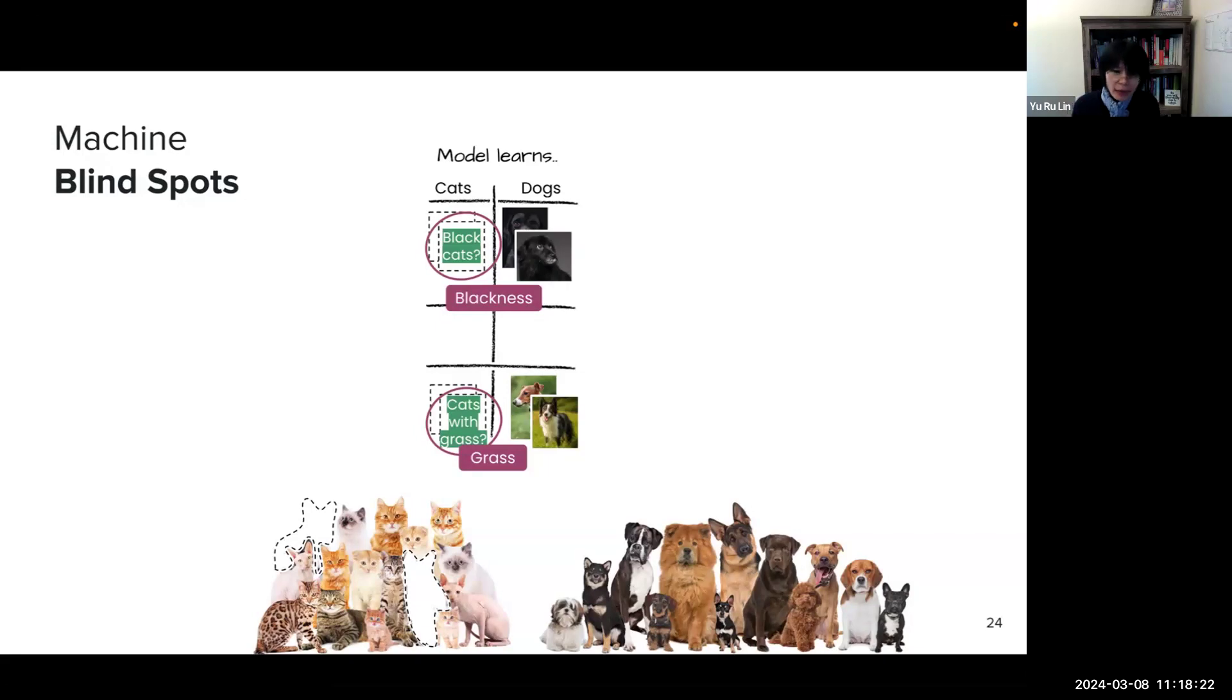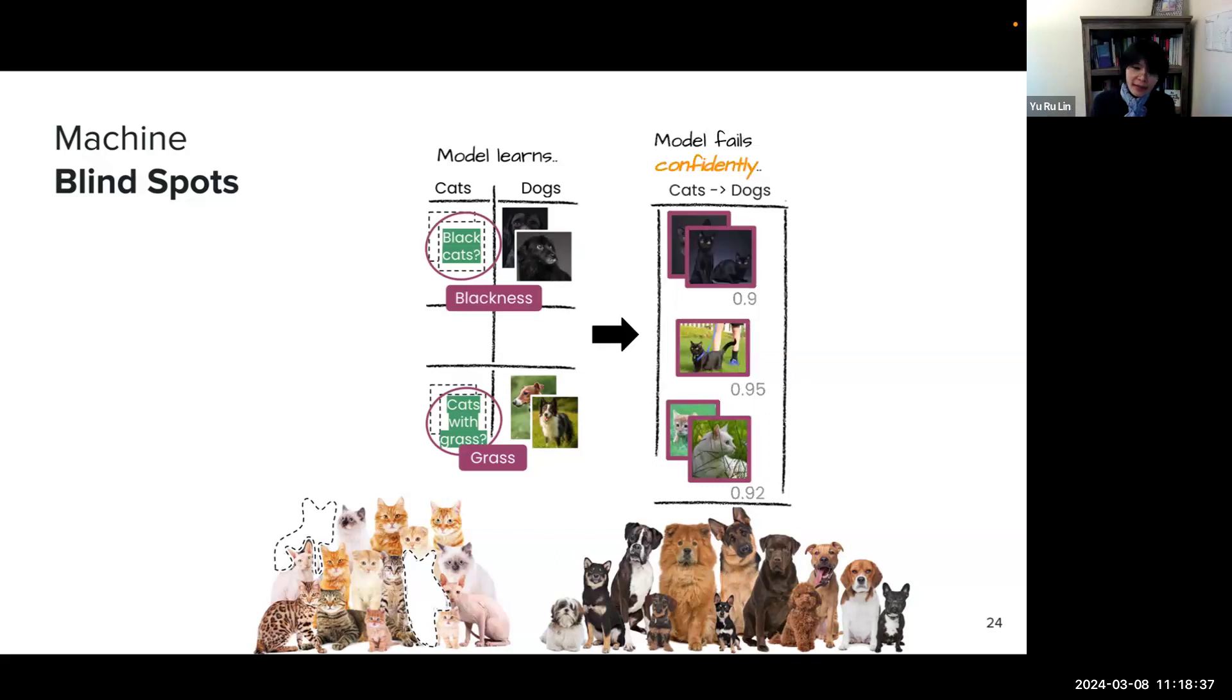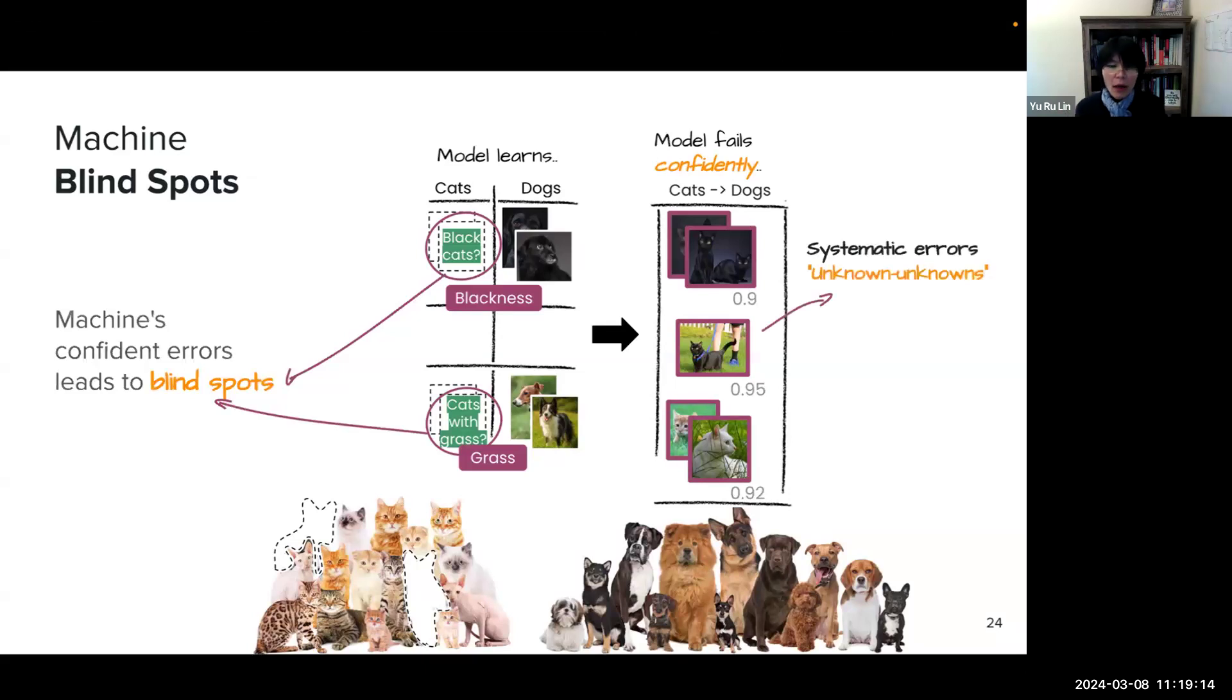For example, when the model only sees black dogs in the training set, but not black cats, the model learns the association. And then, cats with blackness tend to be misclassified as dogs. Not only that, the model fails to recognize cat images, but the model fails with high confidence. So the machine does not even know that it will make such errors. So machine's confident errors lead to blind spots. These are the major source for systematic errors, also called unknown unknowns.